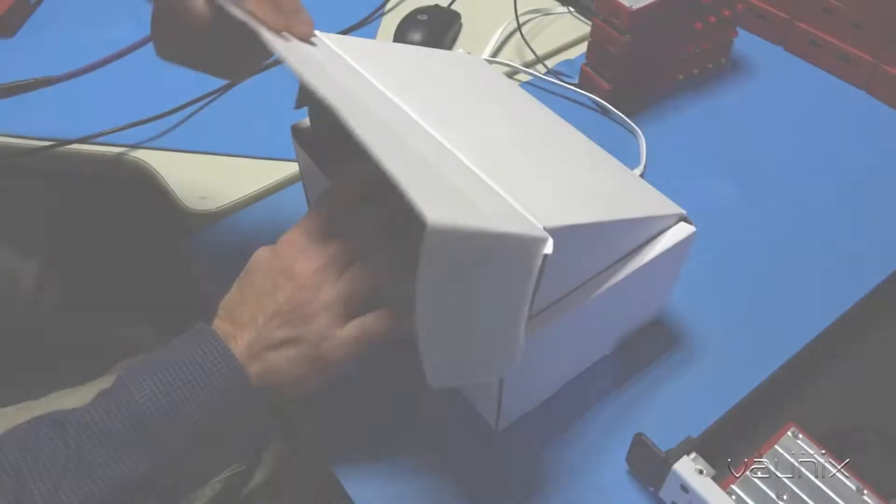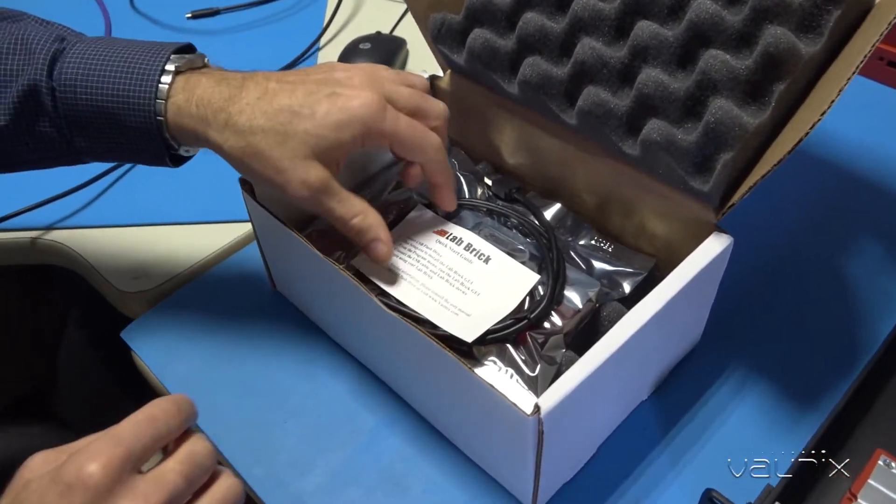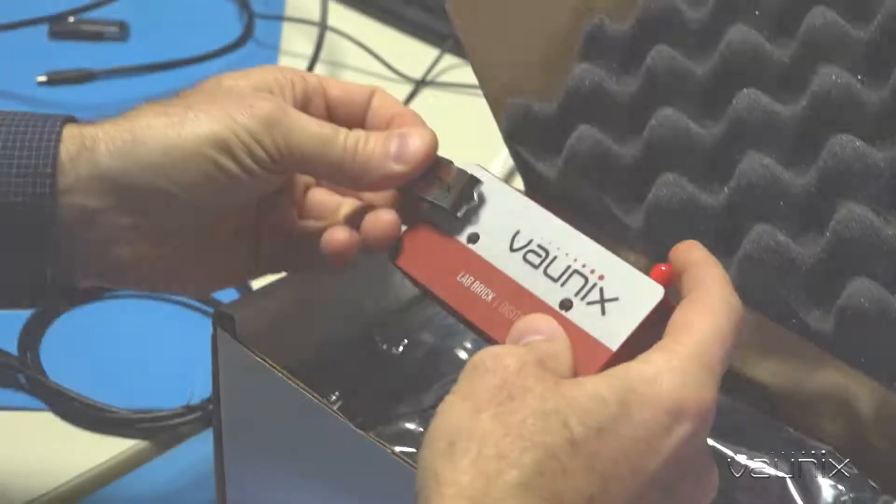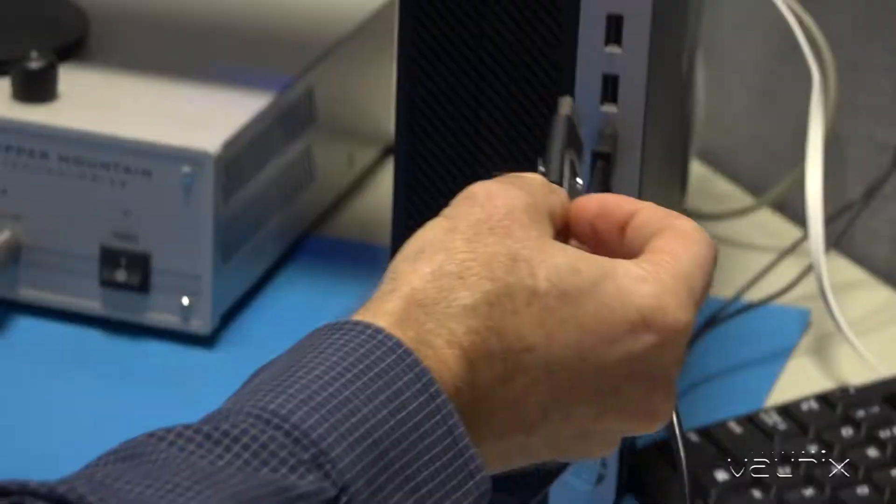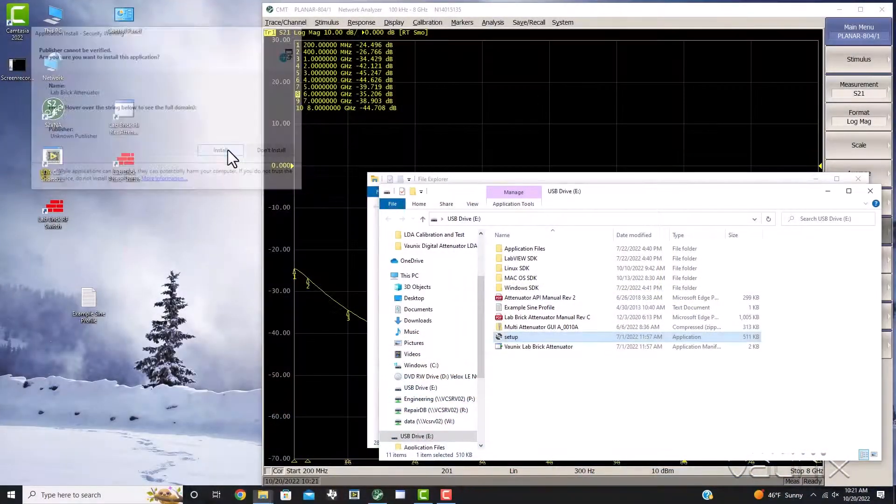When you're ready to get started with the Labric, first things first, make sure you follow the instructions on our easy quick start guide before taking next steps. First, insert the USB flash drive included with the setup. Next, run setup.exe to install the Labric GUI.